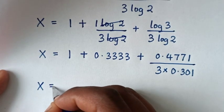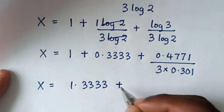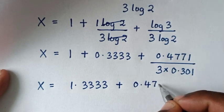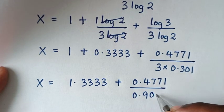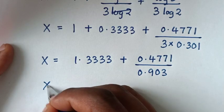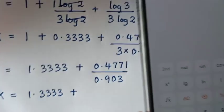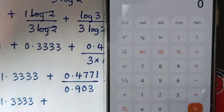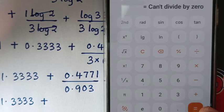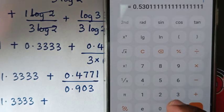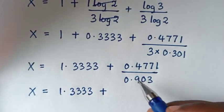So x is equal to 1.3333 plus 0.4771 over 3 times 0.301. Now 3 times 0.301 is 0.903. So x equals 1.3333 plus 0.4771 divided by 0.903, which gives 0.5283.